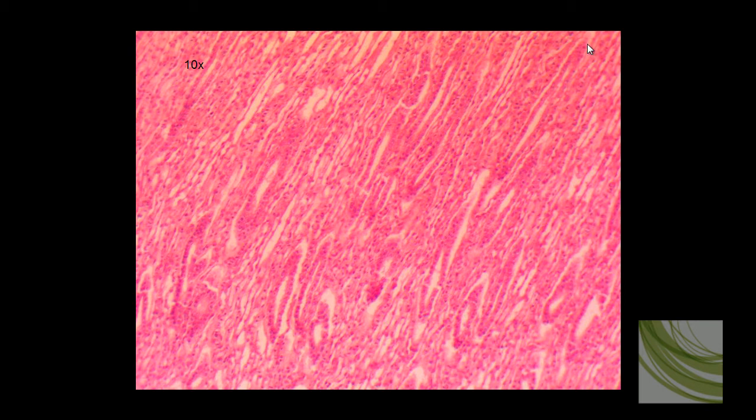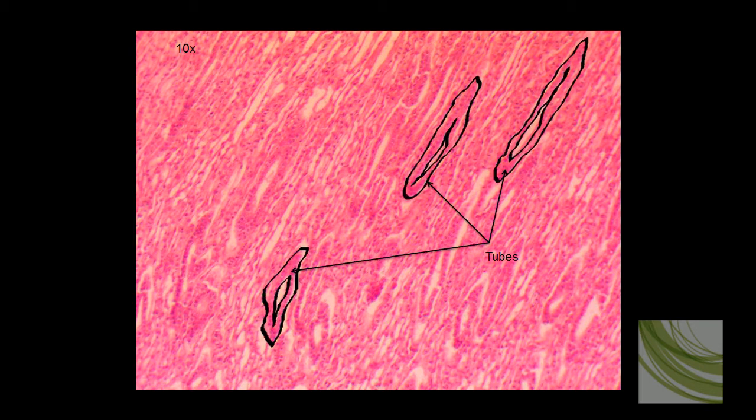Now, using the 10X objective, we can see some of these tubules more clearly with a little lumen or space inside, and we can see this single layer of cuboidal epithelium in these flattened tubules. I've got quite a few tubules here we can see, and I have actually outlined a few of them for you.